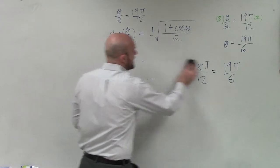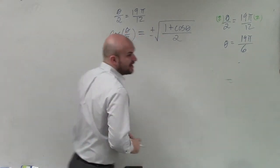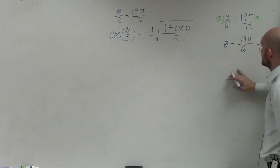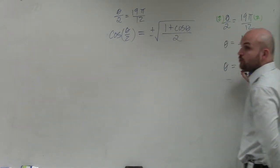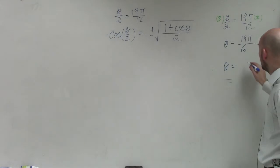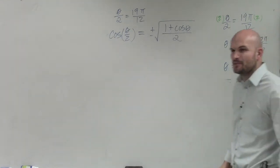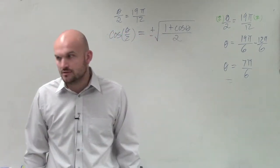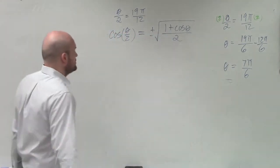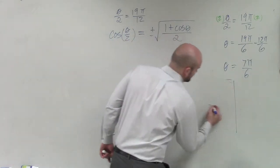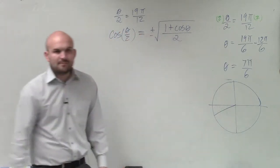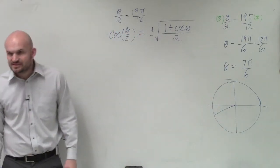OK, so now if I find the coterminal angle, what I'll do is subtract 2π, which is 12π over 6. Therefore, an equivalent angle is going to be 7π over 6. And is that much easier for you guys to visualize where that is on the unit circle? I hope so. Yeah, it's right down there. So we go to right down there.